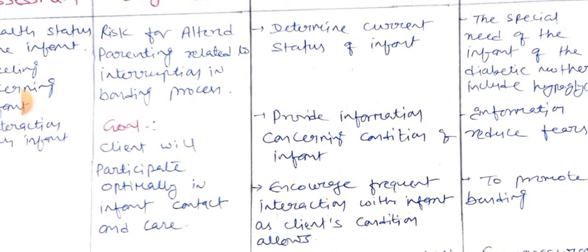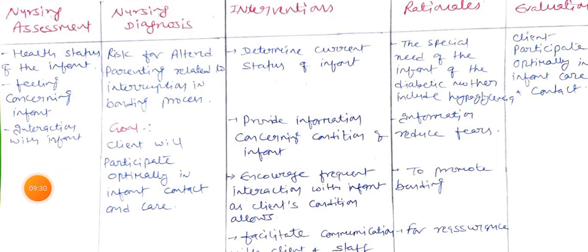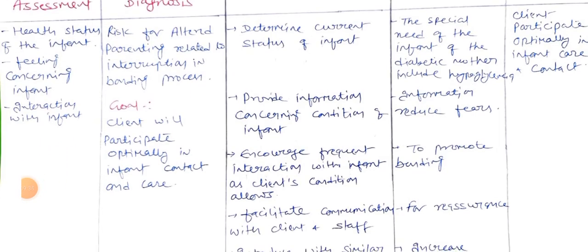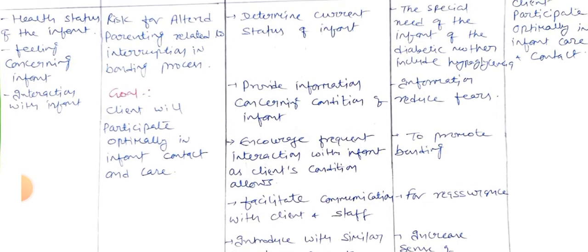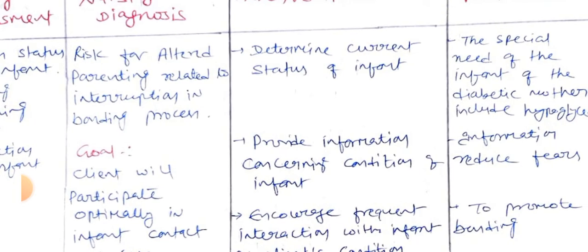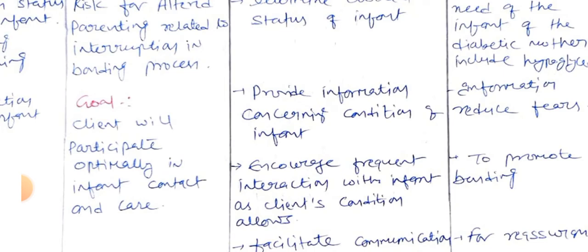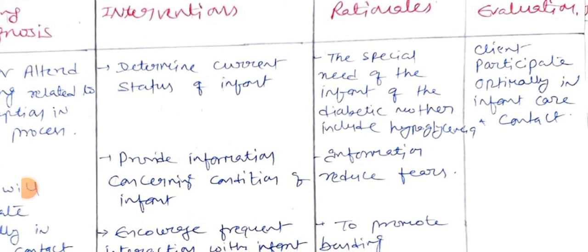Nursing diagnosis four: risk for altered parenting related to interruption in the bonding process. Nursing assessment data includes: health stress of the infant, feeding feelings concerning the infant, and interaction with the infant. The goal is that the client will participate optimally in infant contact and care.